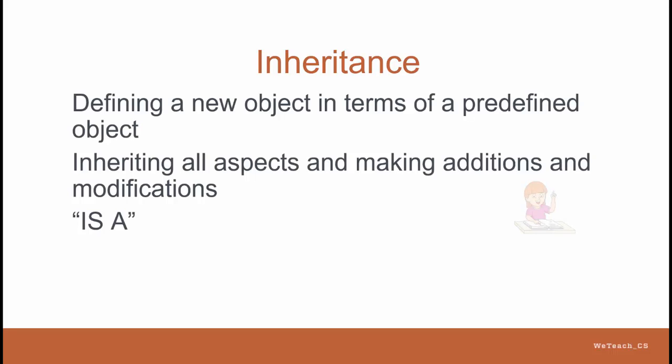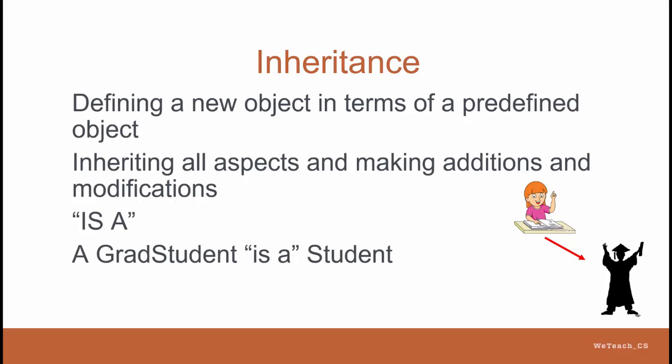For example, if a student object is defined with certain characteristics, and then a grad student object is defined that inherits the student class, it can be said that the grad student is a student. The term parent class refers to the original class, the student in this case. The term child class refers to the inheriting class, which would be the grad student.